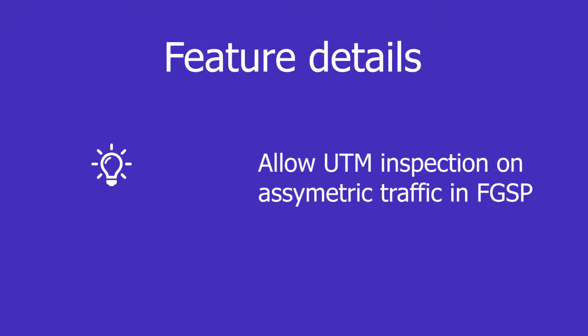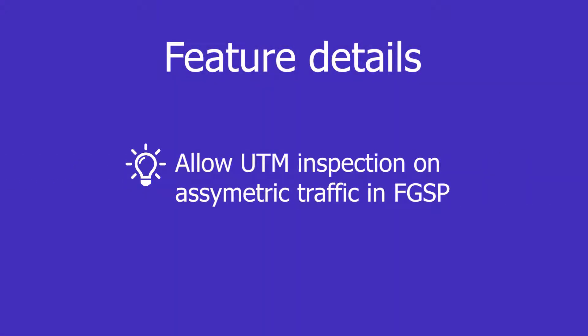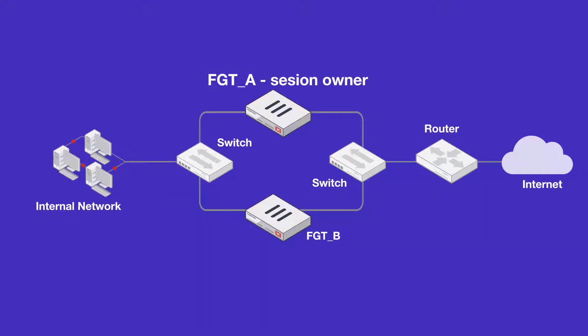This new feature solves the problem of UTM traffic inspection on asymmetric traffic in the FGSP protocol. Before this feature, traffic would go out through FortiGate A and come back through FortiGate B. So we could not check the packets in both directions on the same session owner, which is FortiGate A. Because of that, performing UTM inspection was a challenge.